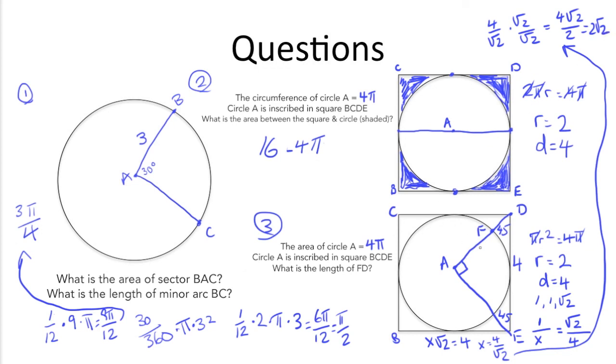So now that we know that this side, DA or AD, is 2 root 2, we know AF, which is the radius of the circle, is 2. All we need to do is take DA and subtract out AF to get FD, which is 2 root 2 minus 2. And that's the answer.